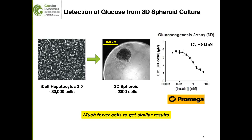We have also measured insulin-dependent effects on gluconeogenesis in 3D spheroids of human iPSC-derived hepatocytes. Instead of using hepatocytes in 96-well format with about 30,000 cells per well, we can miniaturize the assay to use only about 2,000 cells in a 3D spheroid. This takes advantage of the benefits of 3D culture and couples it with a very sensitive luminescent glucose detection assay, reproducing the gluconeogenesis result. CDI has all the protocols in place for these sorts of assays.